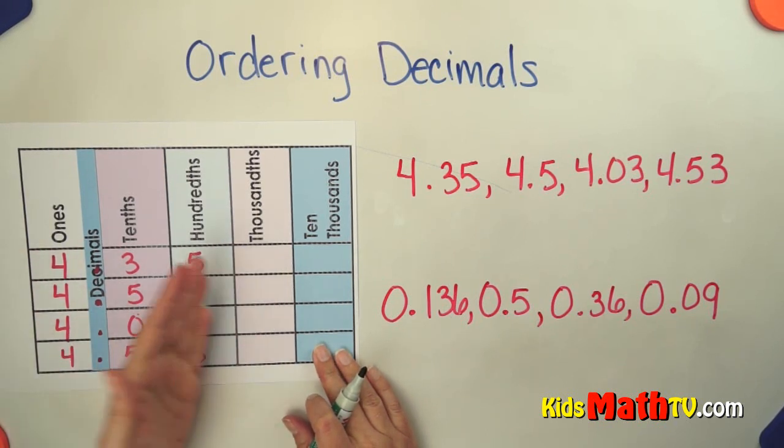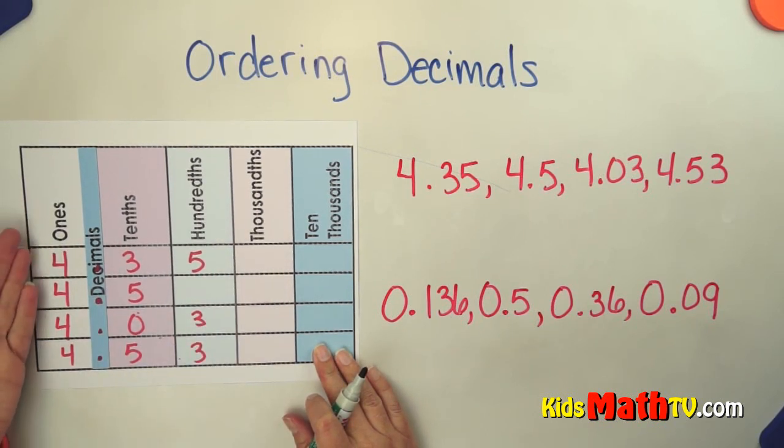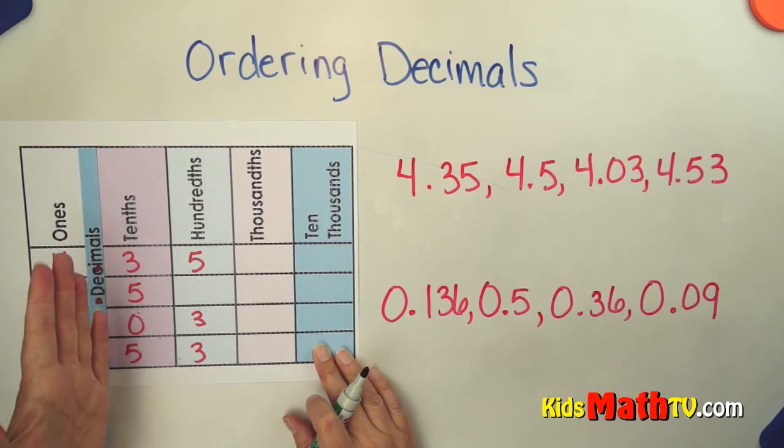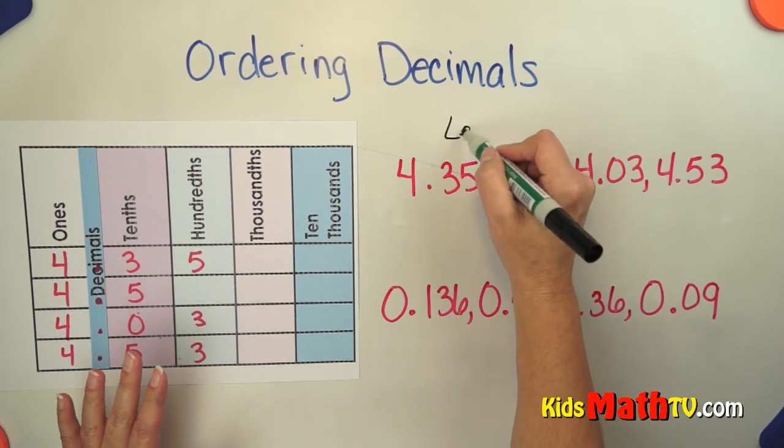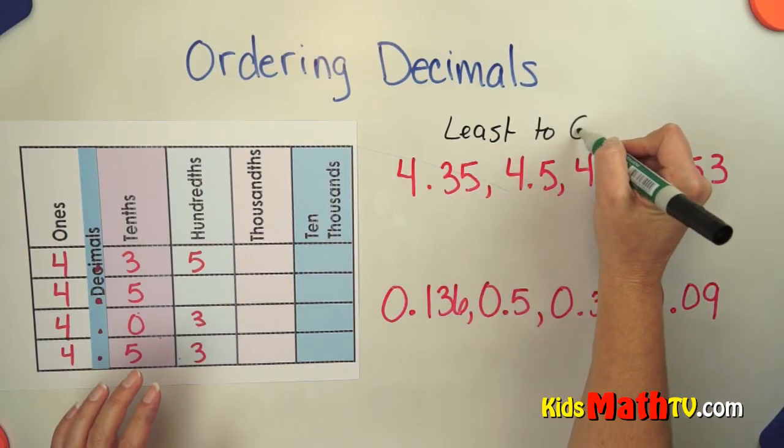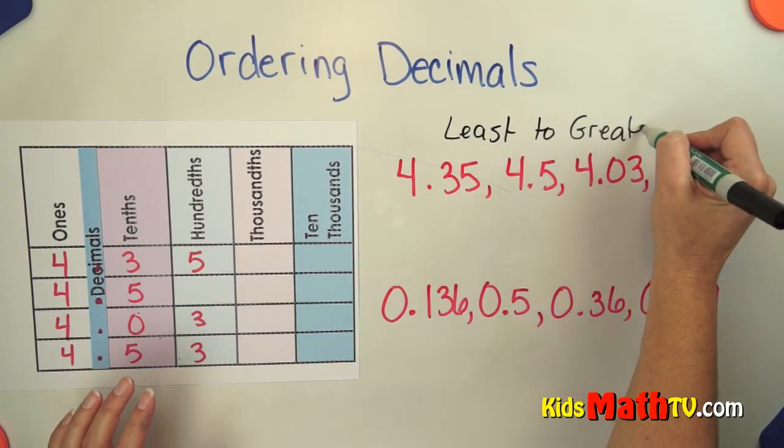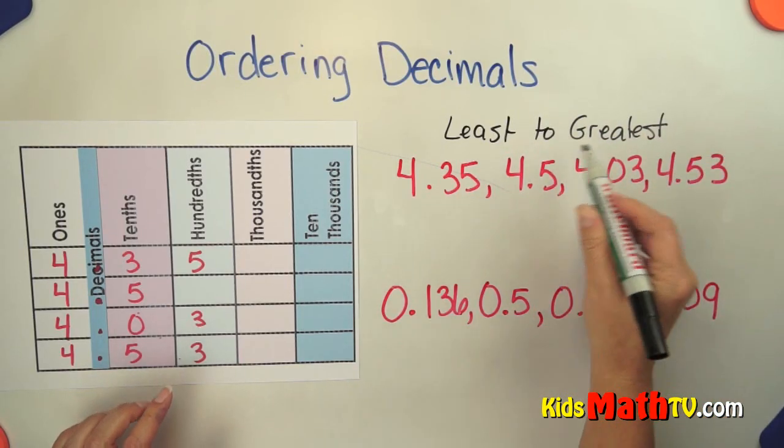First we compare from the left to the right, so we're going to compare the ones. But all of the ones are the same, so that doesn't help us. Now we're going to go to the tenths place. Let's order these, we'll go least to greatest. You have to be careful, sometimes they want you to do greatest to least, but most of the time it's least to greatest.